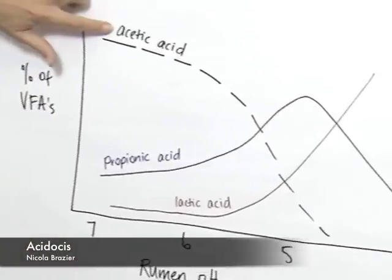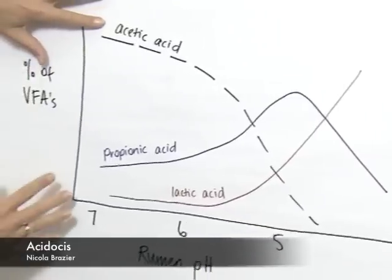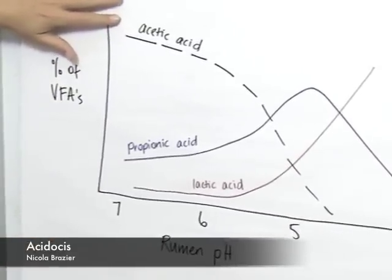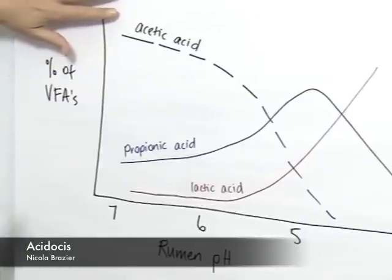Acetic acid is usually present in much greater volumes than other volatile fatty acids. Acetic acid is the product that results when fiber is fermented.